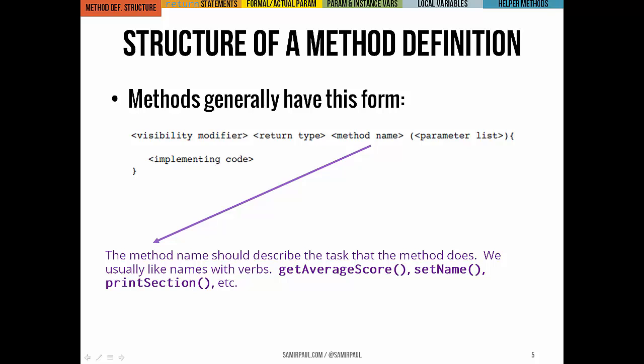Get average score, set name, print section, things like that. Methods do stuff, and we want the names to make clear what precisely they do.